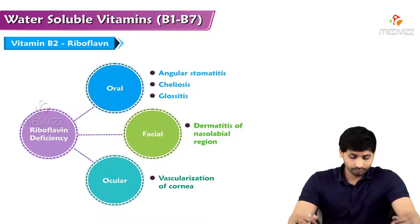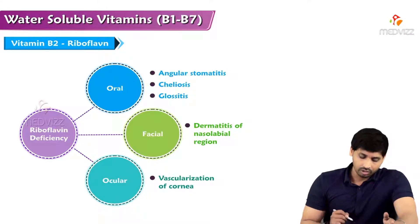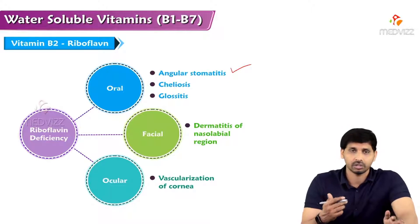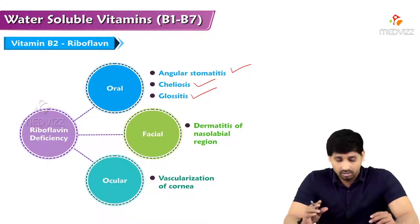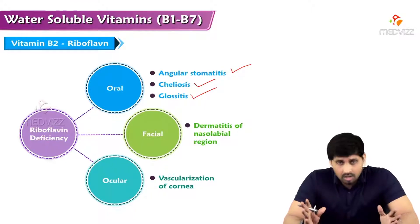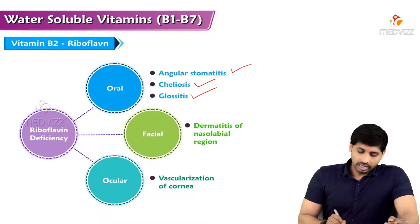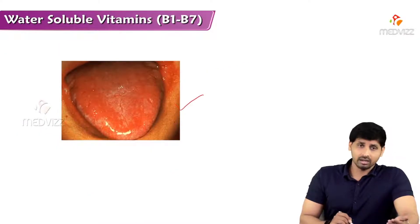Coming to deficiency manifestations of vitamin B2: there are oral, facial, and ocular manifestations. Oral manifestations include angular stomatitis — cracks or fissures at the corners of the lips — and chelosis and glossitis, which involve breakage and purpling of the tongue. Glossitis is a purple or magenta-colored tongue, and by observing it you can identify B2 deficiency. Facial manifestations include dermatitis of the nasolabial region, and ocular manifestations include vascularization of the cornea. In the picture you can see a magenta or purple colored tongue — this is called glossitis.